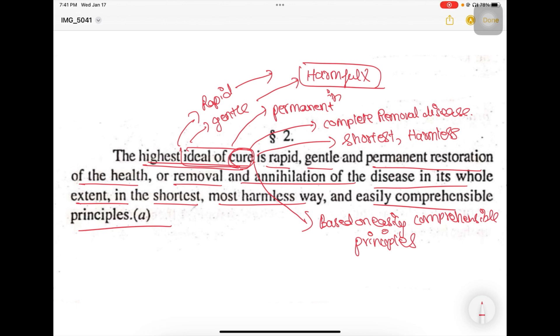So this cannot be called as cure. Therefore, Hahnemann says that there has to be a permanent restoration of health. If there are any recurrence of symptoms, then this cannot be termed as cure. So he says cure must always be permanent. And he also uses the word removal and annihilation. Annihilation means complete destruction of the disease in its whole extent. So let us understand one concept over here.